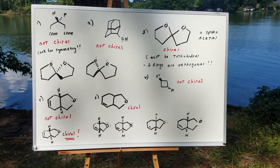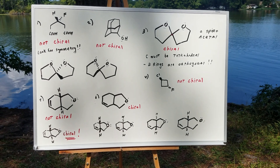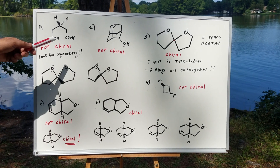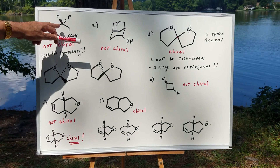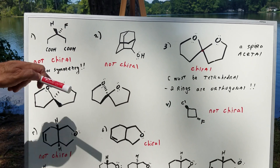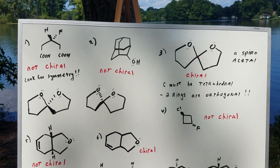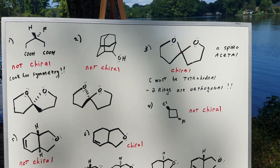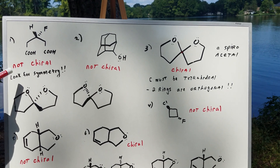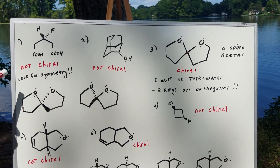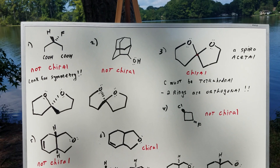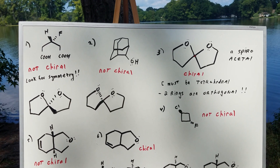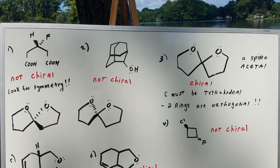Example number one: this is not chiral. The key thing you want to do is look for symmetry. As you can see in example number one, the left path and the right path would be exactly the same — this molecule is symmetrical, so it is not chiral.